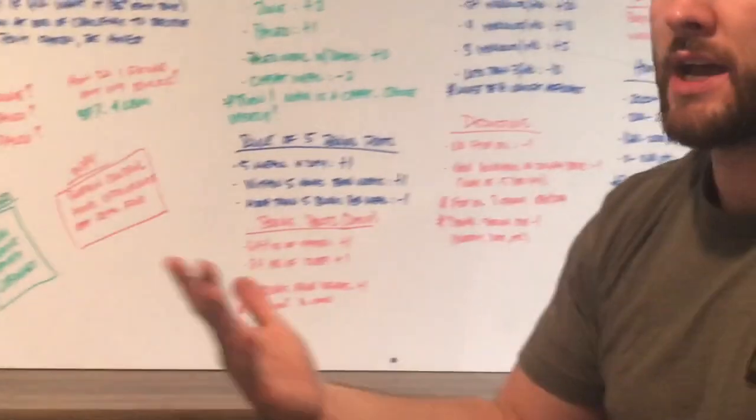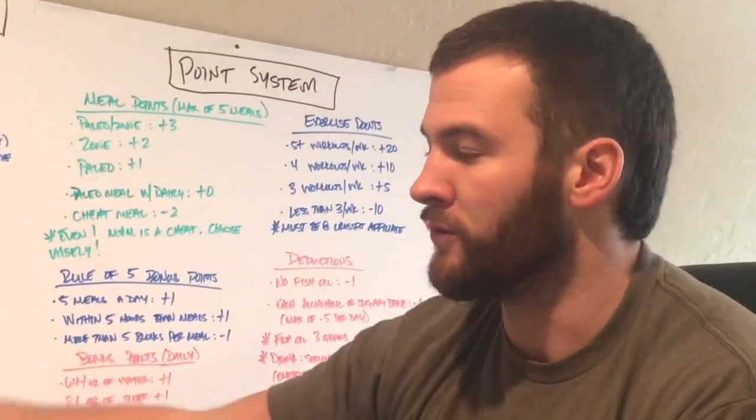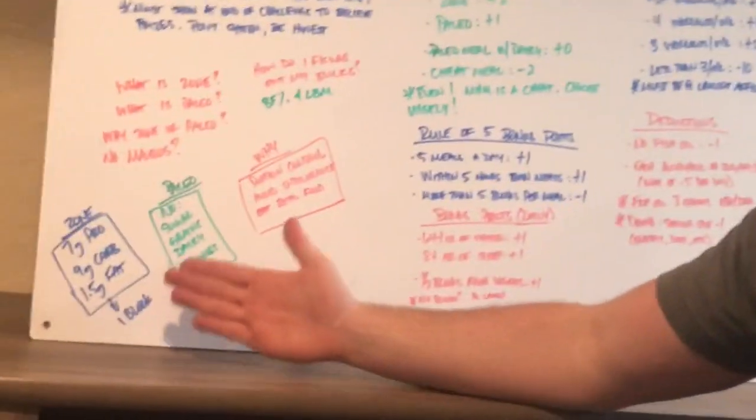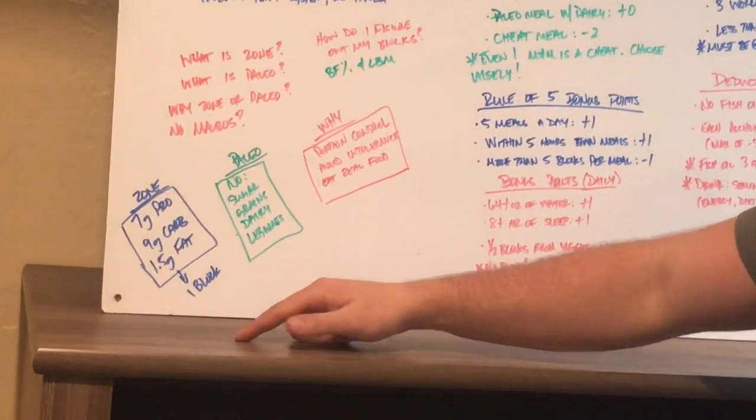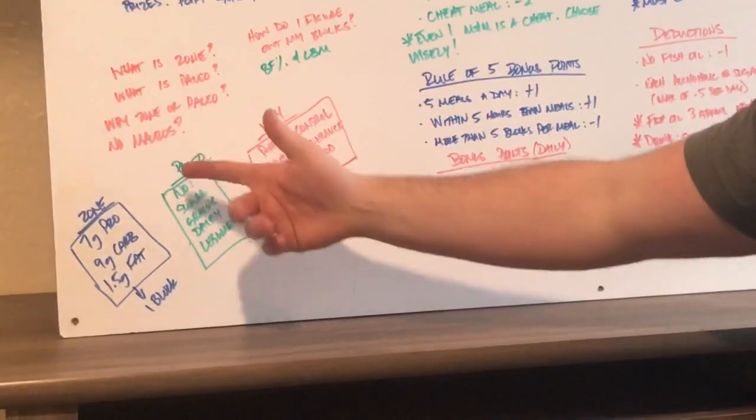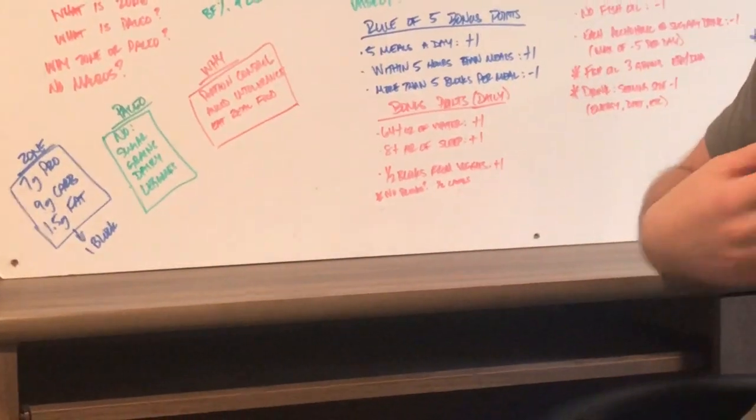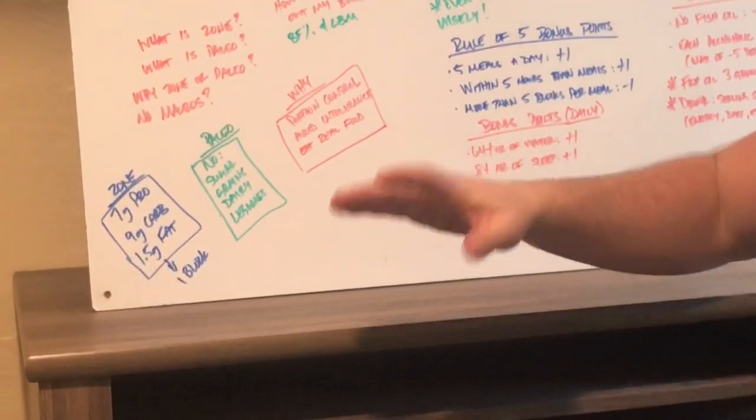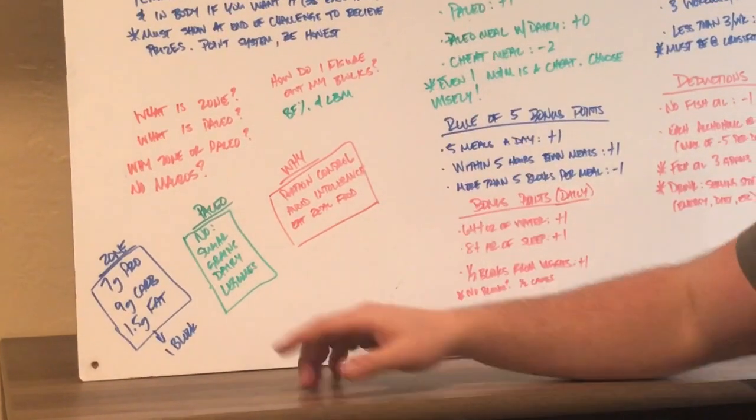And most of the people, when you do your macros, it's the same exact thing. They do 40% carbs, 30% fat, 30% protein for the most part. So the zone is in the same format. It's just in each block. So we've talked about the zone a little bit. So that's why we're doing the zone. It's just another way of doing macros. I think it's a simpler version because it's just super easy to do. You don't have to type in each little thing for your macros. I think it's easier.